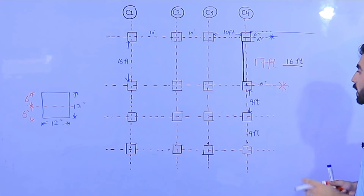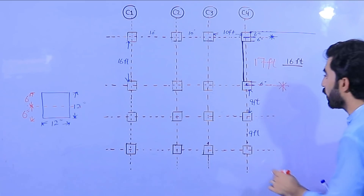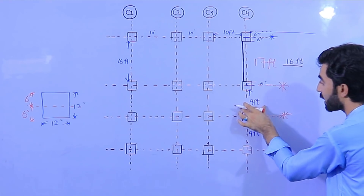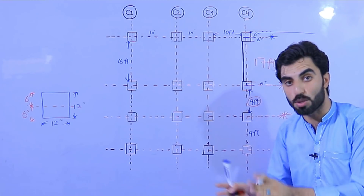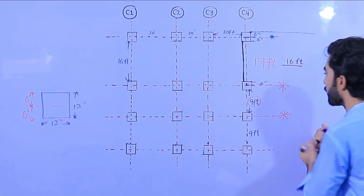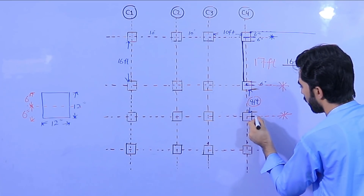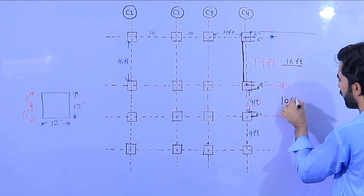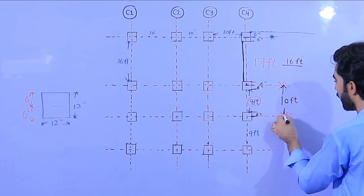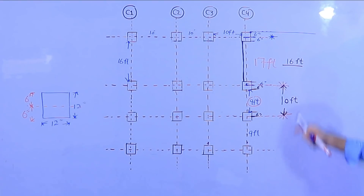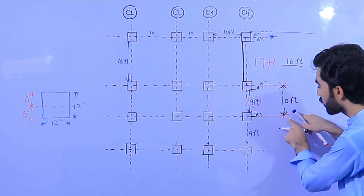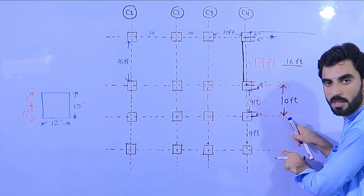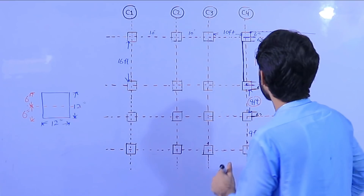Again, if the clear distance is 9 feet, we take the other measurement to this center. We will not measure 9 feet because that is the clear distance between two columns. We will keep 6 inches on each side — both sides — so we keep 10 feet. If you have 9 feet clear distance, from one center to the other center we keep 10 feet. If the clear distance is 11 feet, then we keep 12 feet — same procedure.